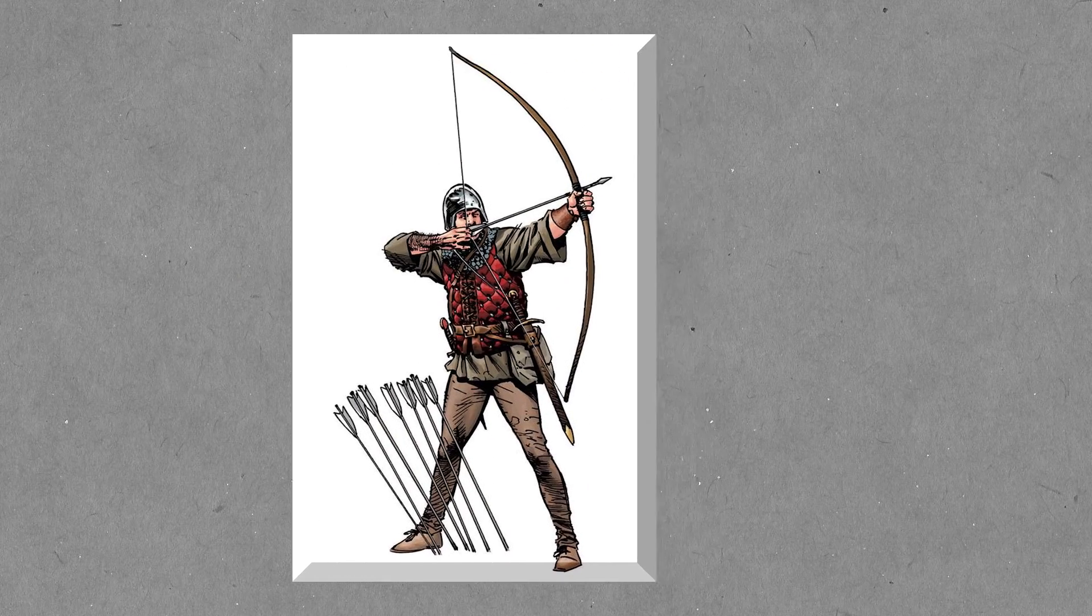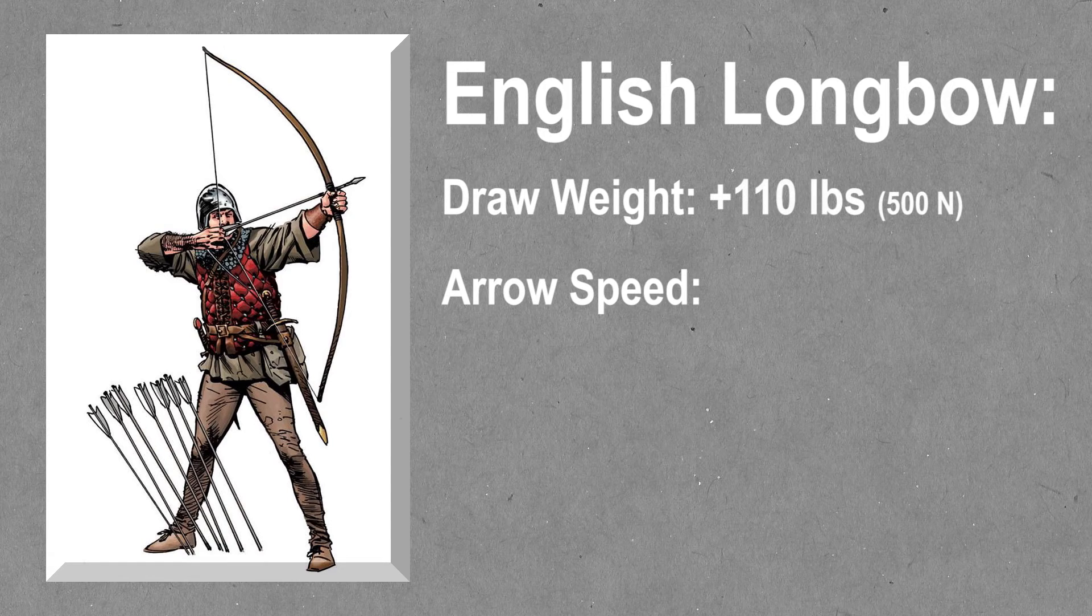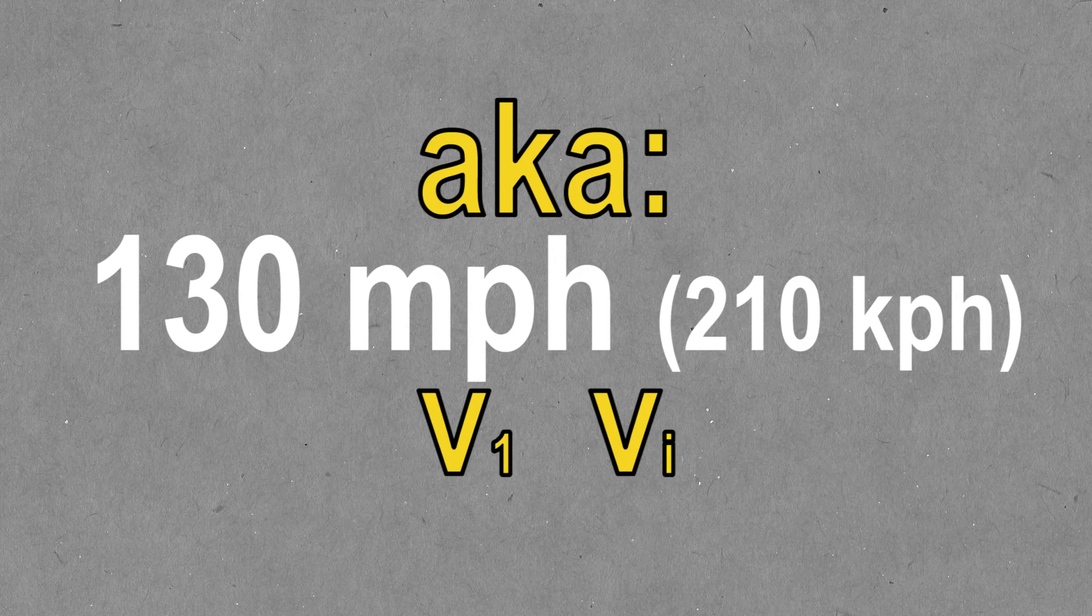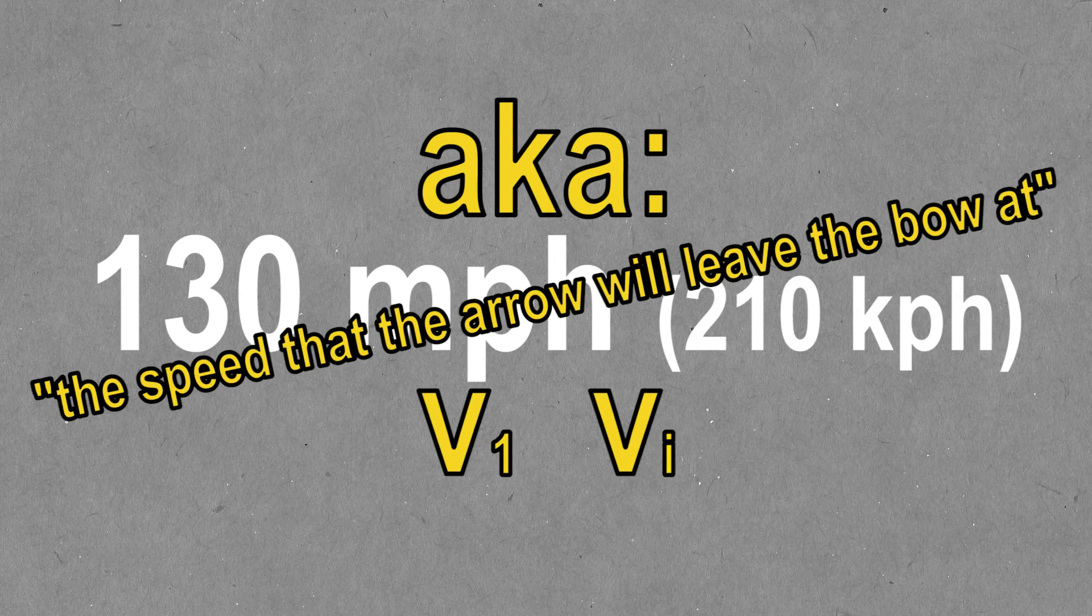For reference, English longbows, which required more than 100 pounds of force to draw, can fire an arrow up to about 130 miles per hour. So let's just say that this is V1 or V initial. This is the speed that the arrow will leave the bow at.